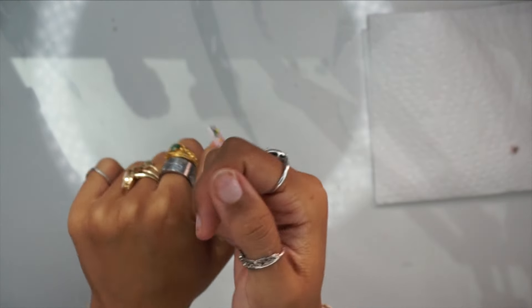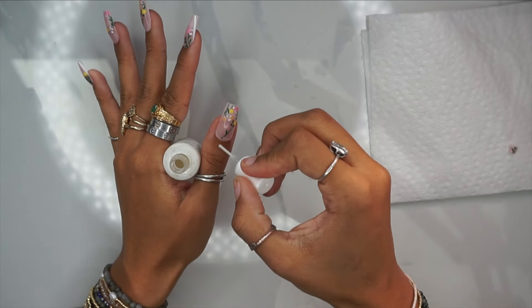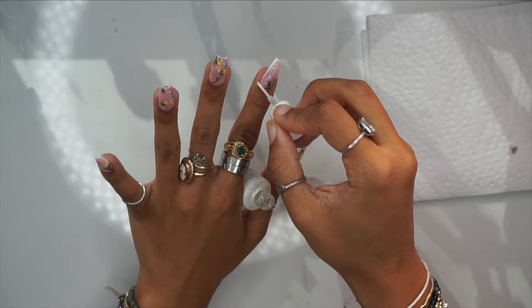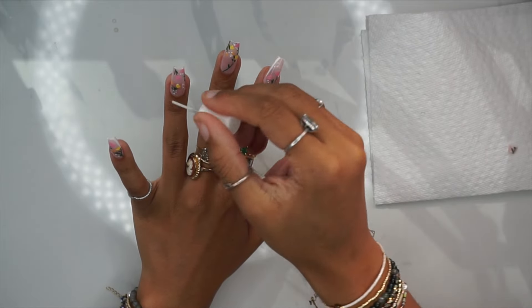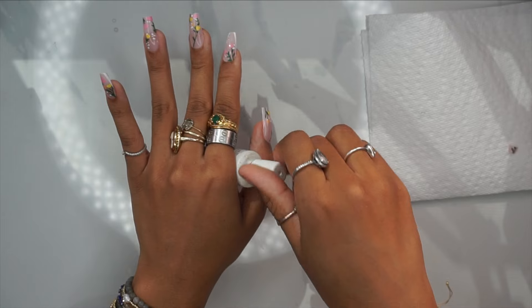Next, this is one of my other secret hacks: this Young Nails Protein Bond. You can use a dehydrator or actually you can use a primer, and it just really helps melt that cuticle into your nails and into your cuticle and it just helps give it a seamless look.